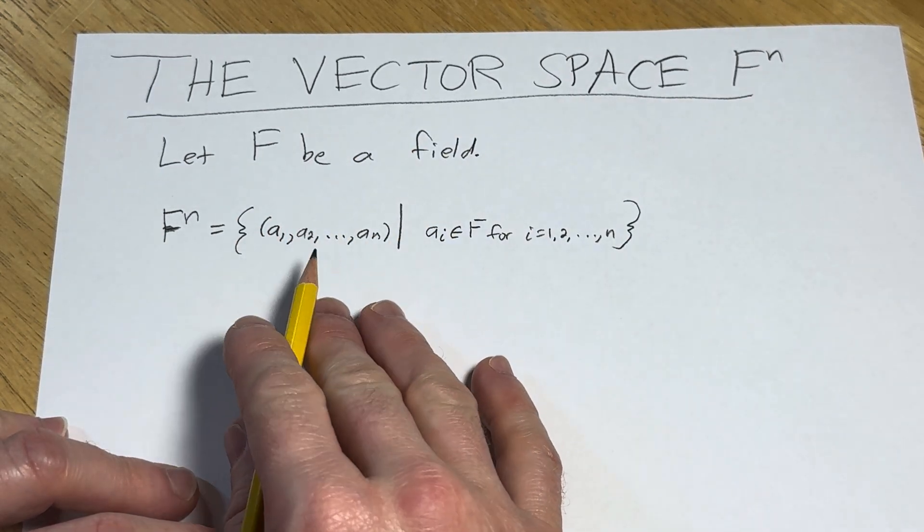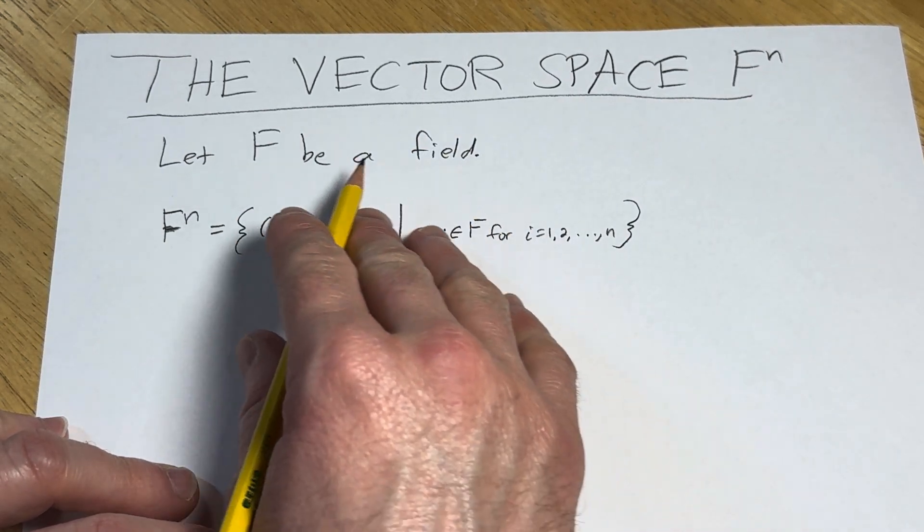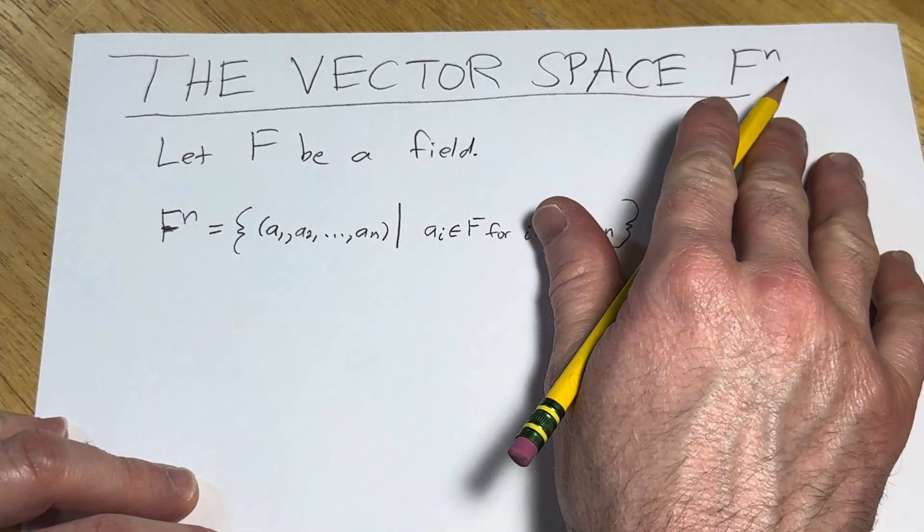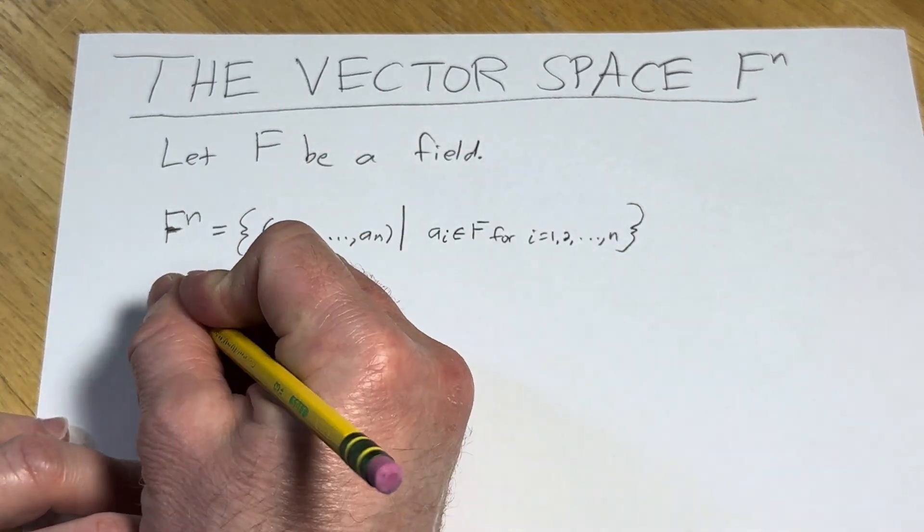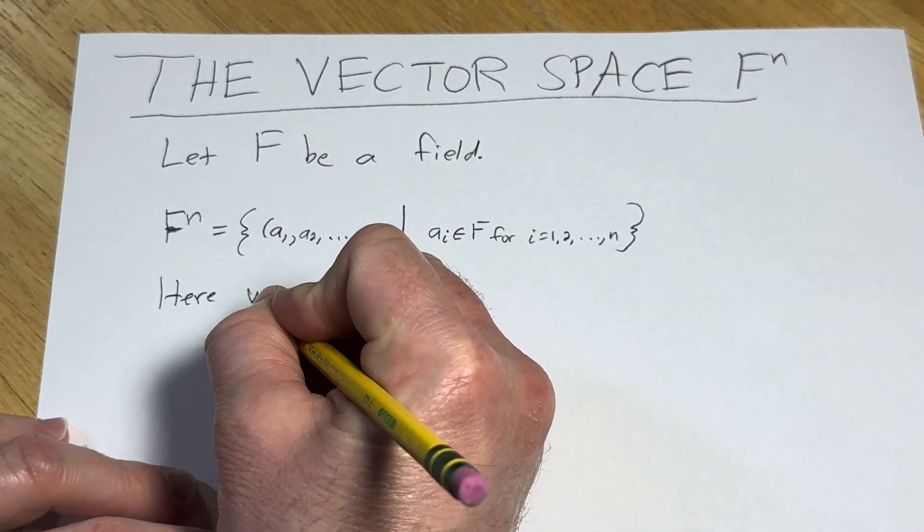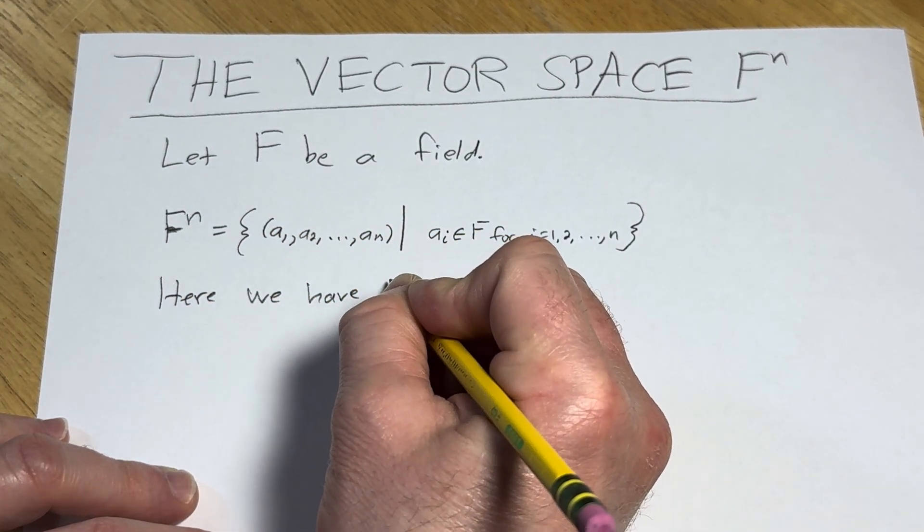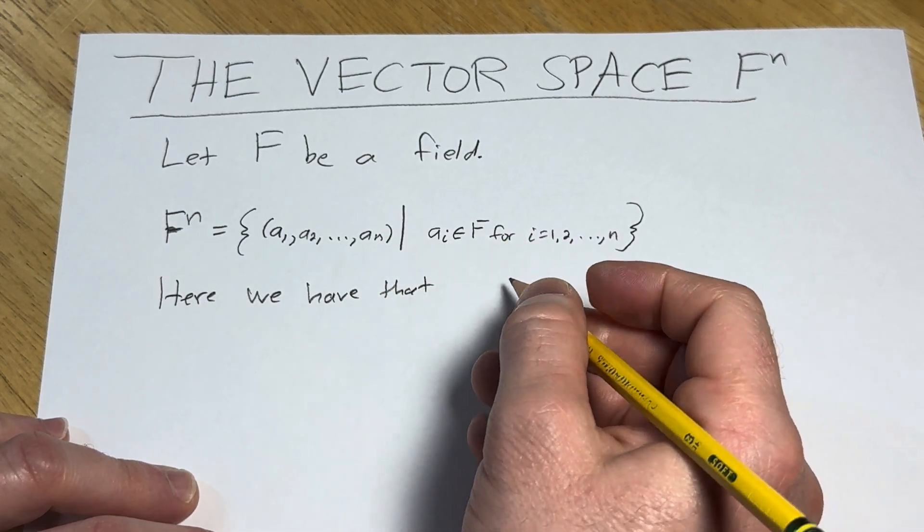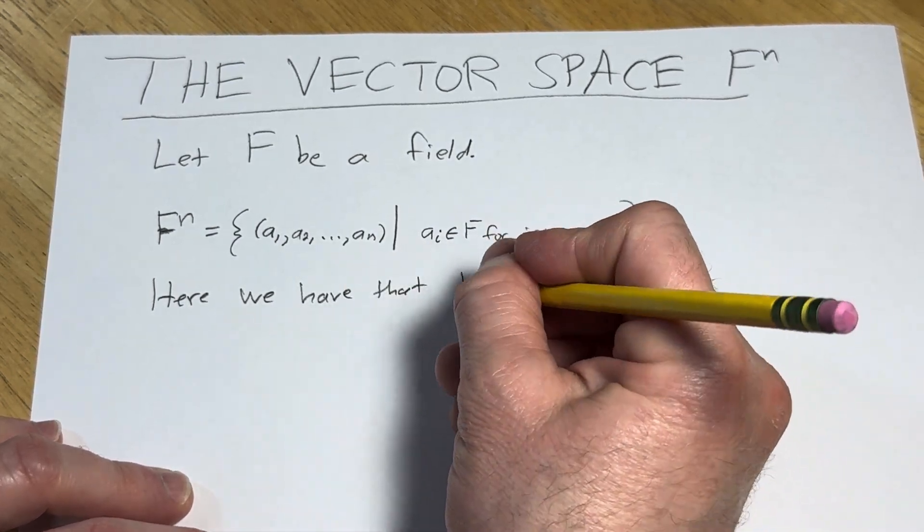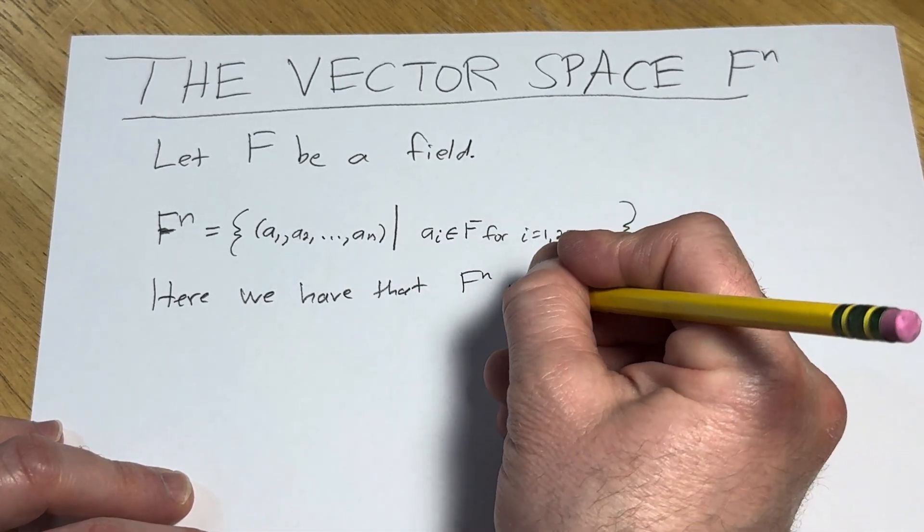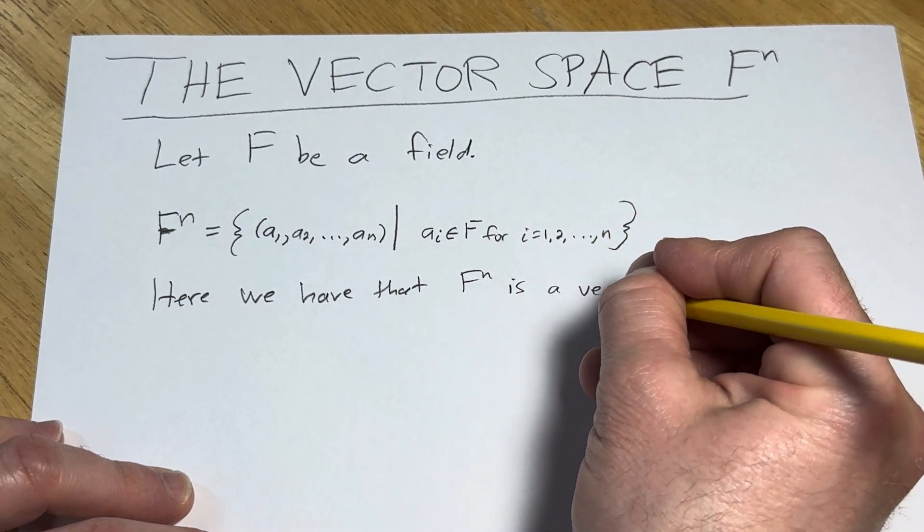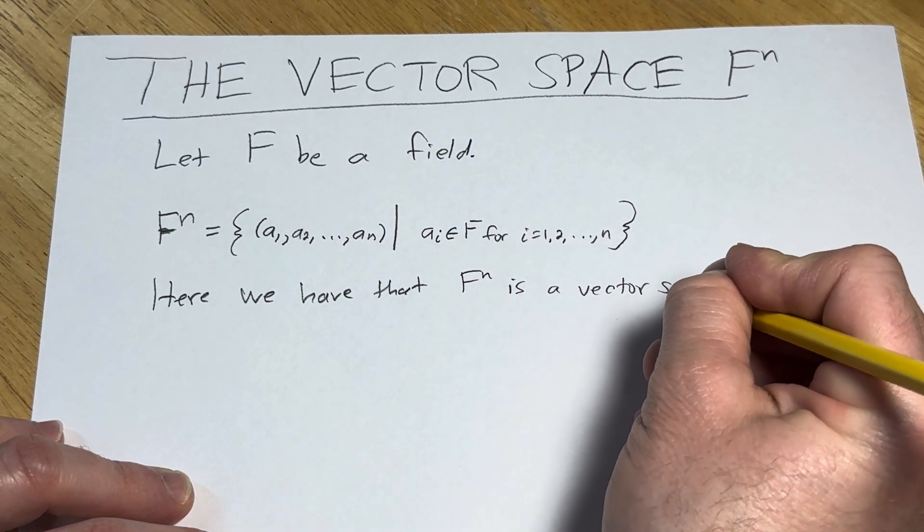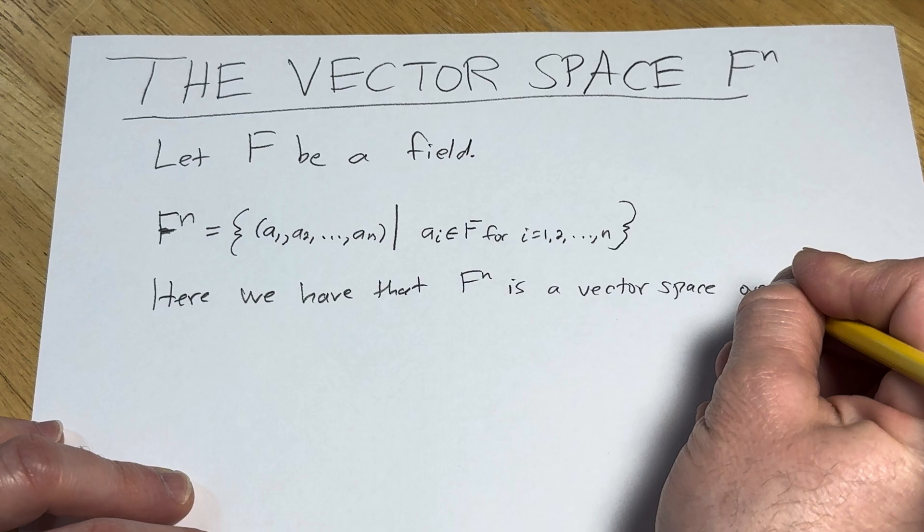All right, so these are all n-tuples. And in this case, this is a vector space over F. So here, we have that, and I'm going to show you the operations as well. We have that F^n, or F to the n, is a vector space over F.